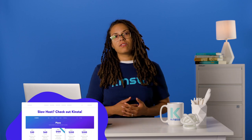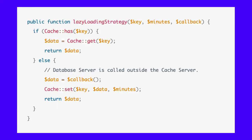In the cache-aside strategy, the database is sitting aside and the application requests data from the cache server first. If there's a hit, the data is returned to the client. Otherwise, if there's a miss, the database server requests the data and updates the cache server for subsequent requests. You can implement this strategy with the following code. This is equivalent to implementing the cache remember method.